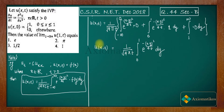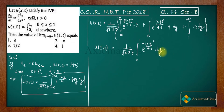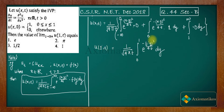Now what we need is u(1,t), not u(x,t). So we replace x with 1. Since the integral is in y and not x, we can directly substitute x = 1, giving us u(1,t) equal to 1 over √(4πt) times the integral from 0 to 1 of e^(−(1−y)²/4t) dy.